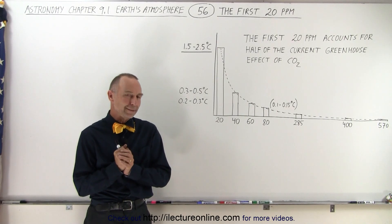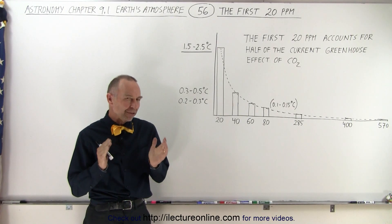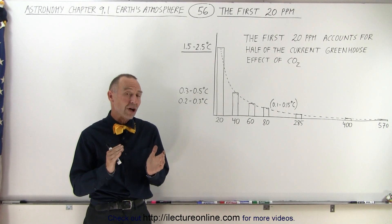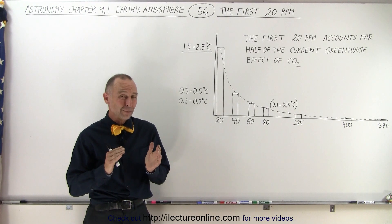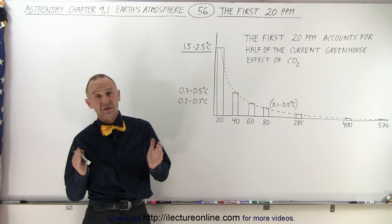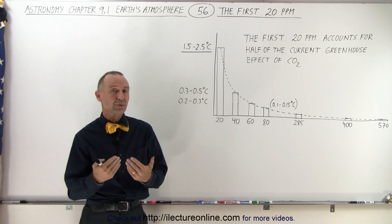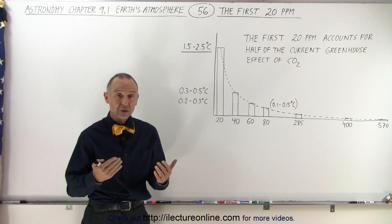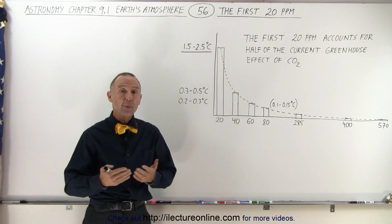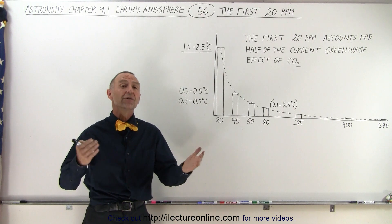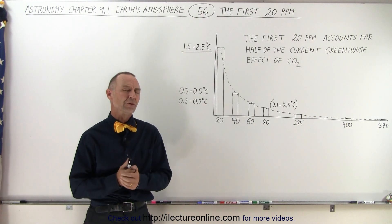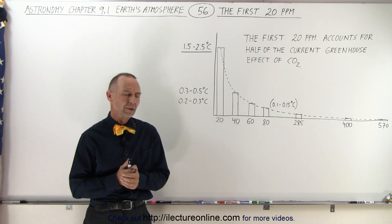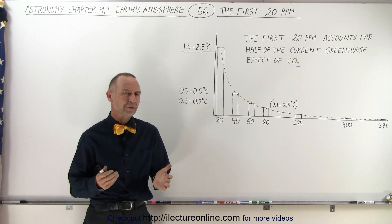Welcome to ElectronLine. In the previous video we saw that there was a big discrepancy between the actual temperatures recorded and those that were predicted by well over 100 temperature models. So why are they so different?